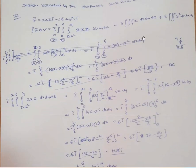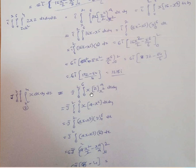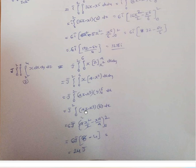Similarly for the j̄ term: j̄ · ∫∫∫ x dx dy dz. Integrating with respect to z, x is constant, so integral of 1 dz = z from x² to 4, giving x·(4 − x²) dx dy, which is (4x − x³) dx dy. Integrating with respect to y gives factor 6, then 6 j̄ · [4x²/2 − x⁴/4] from 0 to 2, simplifying to 24 j̄.